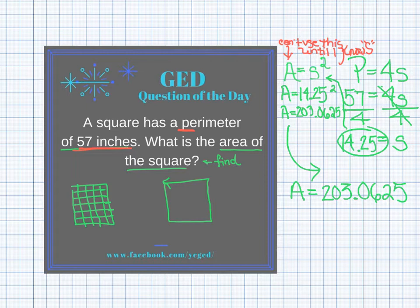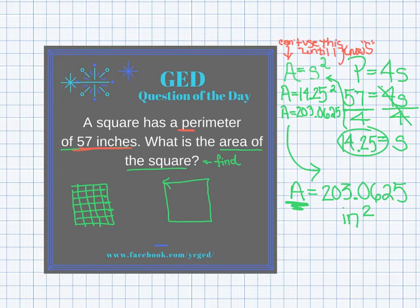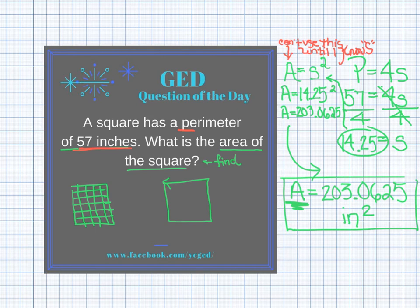I do need a unit though. This is an area, and areas are always measured in square units, so this is 203.0625 square inches. Mathematicians abbreviate square inches by putting a little floating 2 — an exponent — on top of the inch symbol. So the final answer is 203.0625 in². If you have any questions, be sure to drop them in the comments.